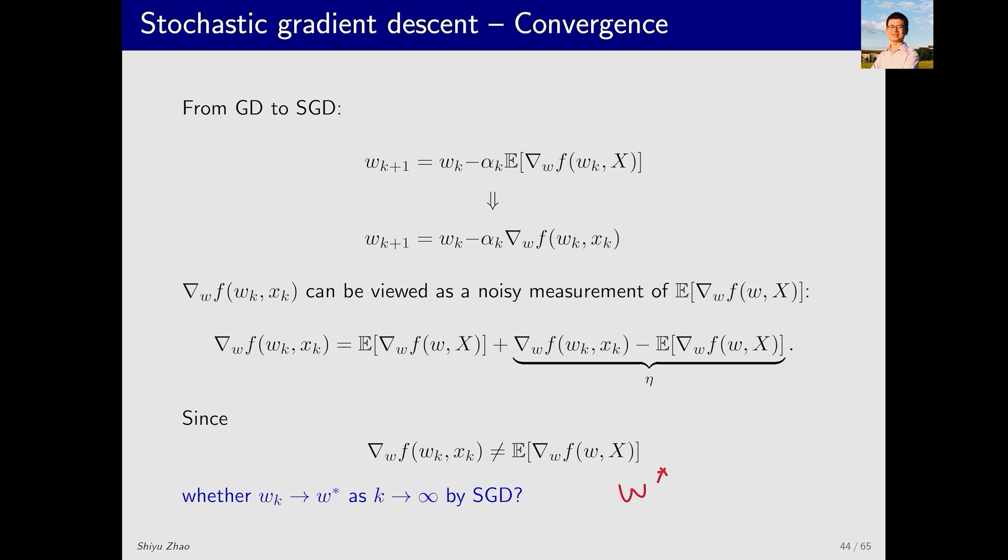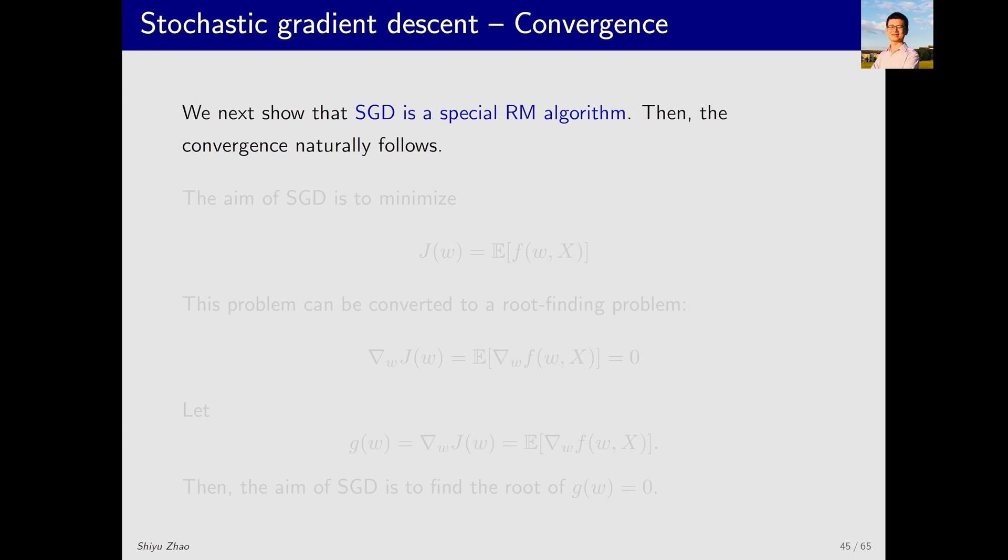The basic idea of the proof is to show that SGD is a special RM algorithm. Since we already know that the RM algorithm converges under certain conditions, we can know under what conditions SGD also converges. This idea is very straightforward. Another approach is to prove the convergence of SGD directly, without relying on RM algorithms. This proof is very complex. Interested readers can find it in my book.